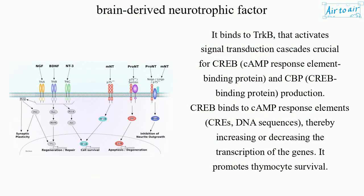It binds to TRKB, which activates signal transduction cascades crucial for CREB (cAMP response element binding protein) and CBP (CREB binding protein) production. CREB binds to cAMP response elements (CREs) — DNA sequences — thereby increasing or decreasing the transcription of genes. It also promotes thymocyte survival.